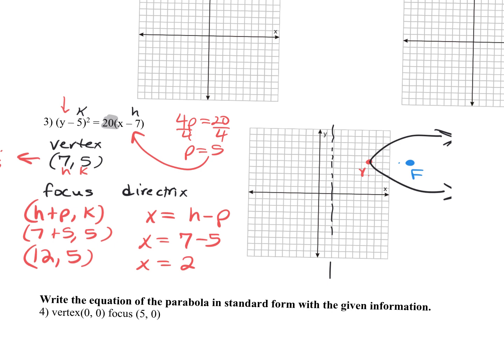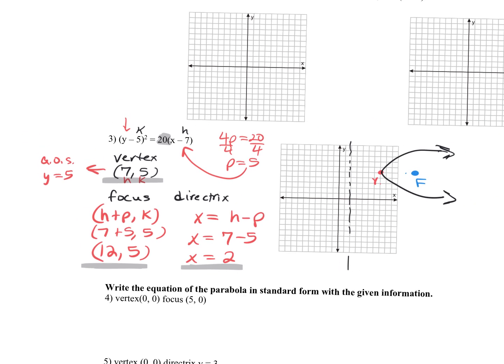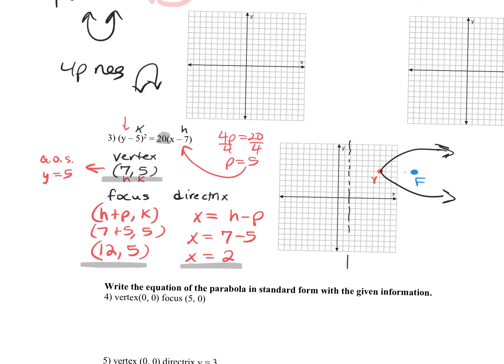I'm not going to make you find an additional point. Just make sure it's going either a C, a backward C, a U, or an upside-down U. On the test, you're going to have a blank line where you fill in the focus ordered pair, the directrix ordered pair, and this equation — and then you'll graph it.